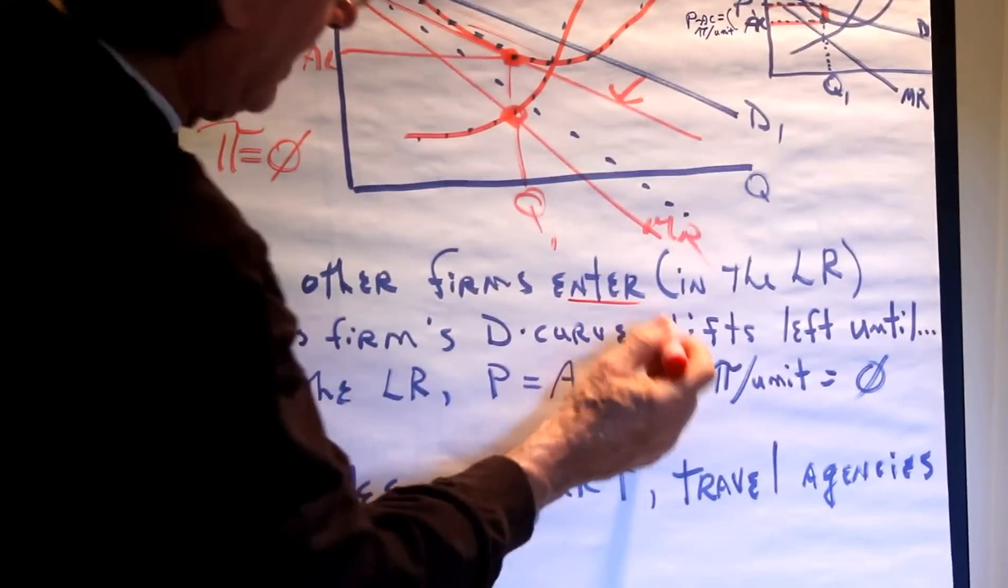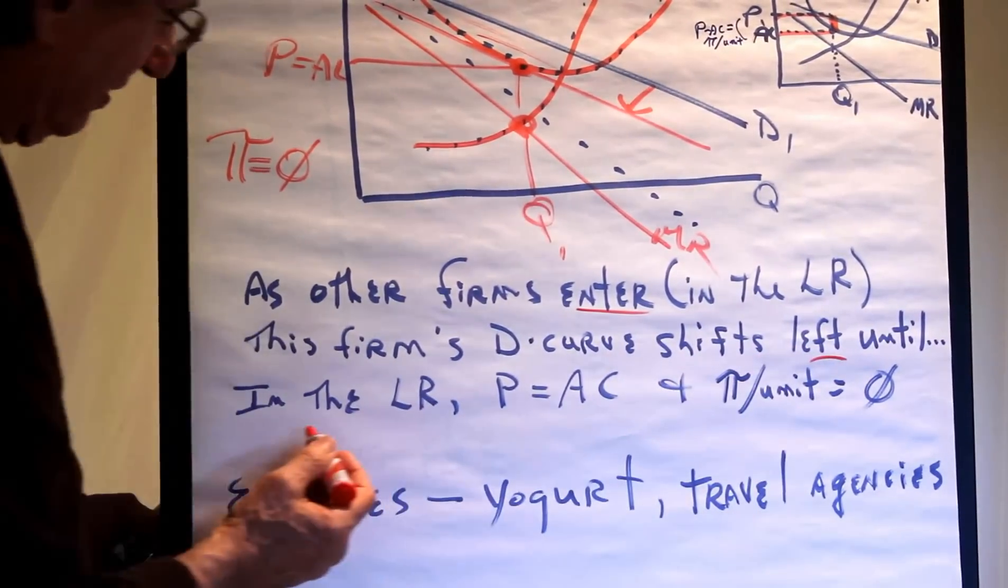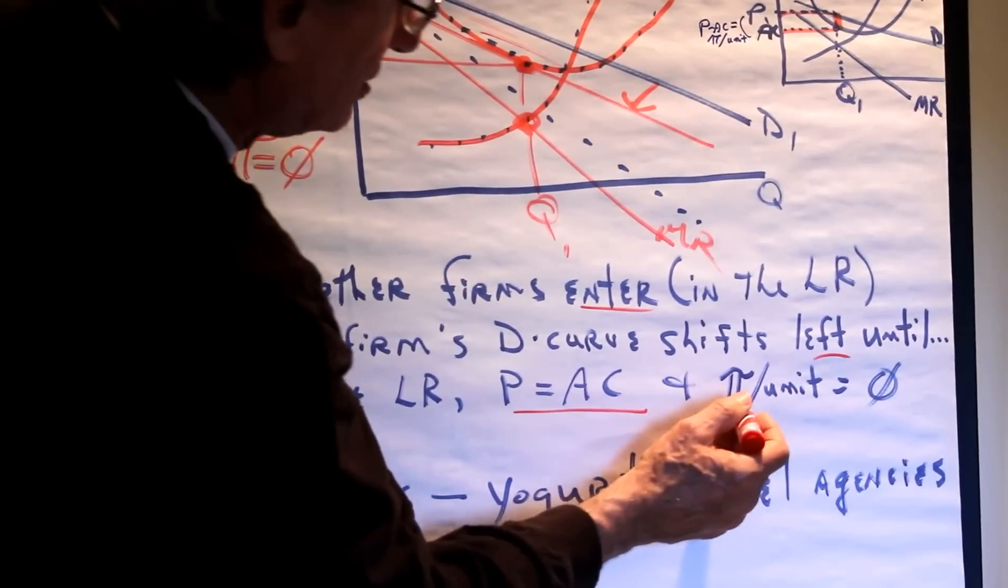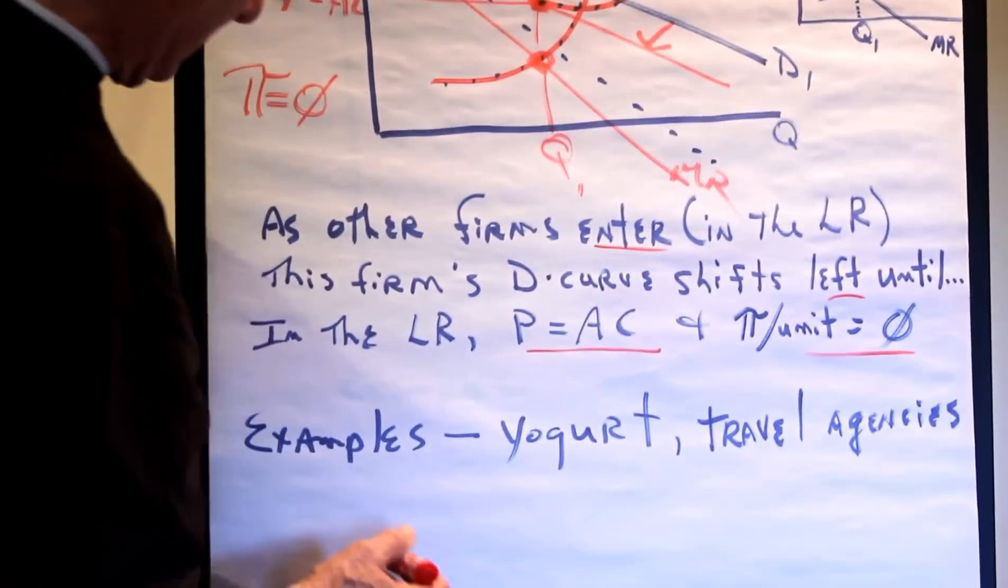So when price equals average cost, profit per unit equals zero and total profit equals zero. So other firms enter, this firm's demand curve shifts left until in the long run price equals average cost and profit per unit is equal to zero.